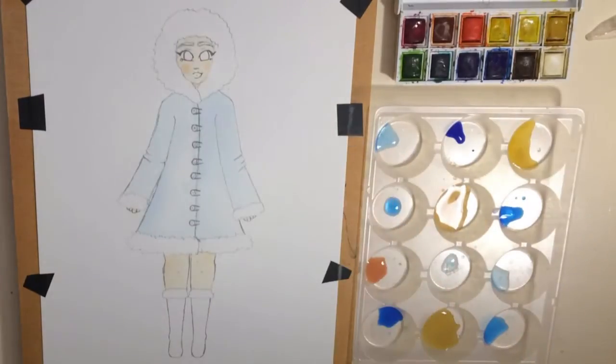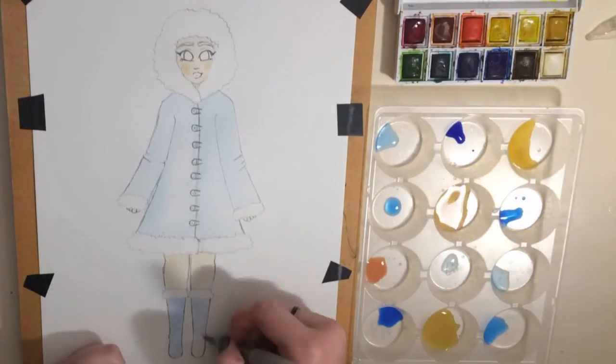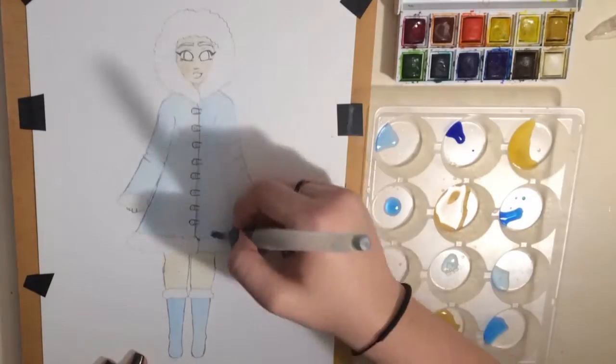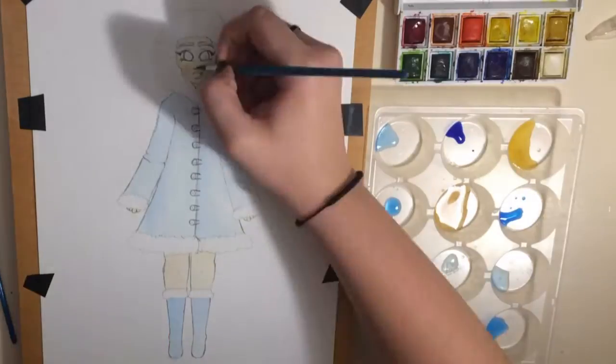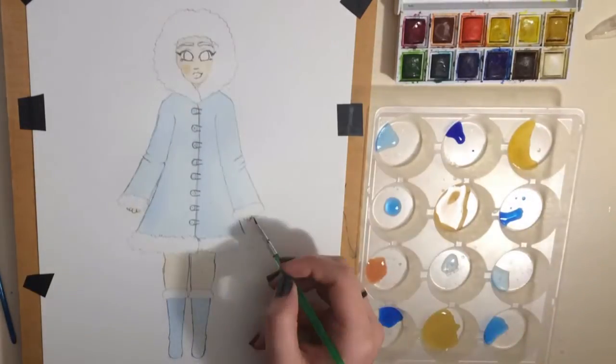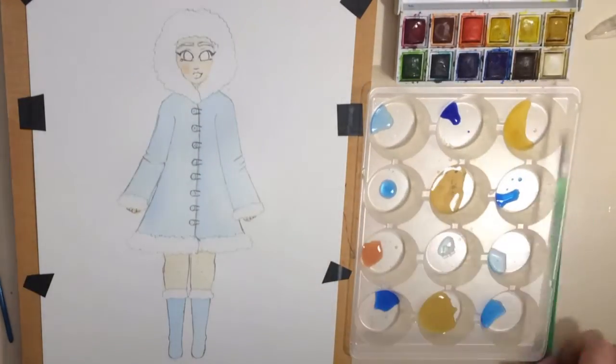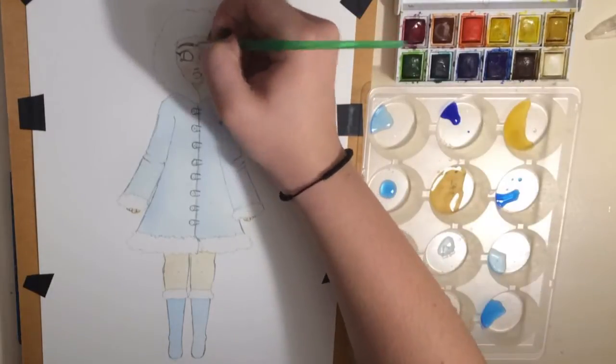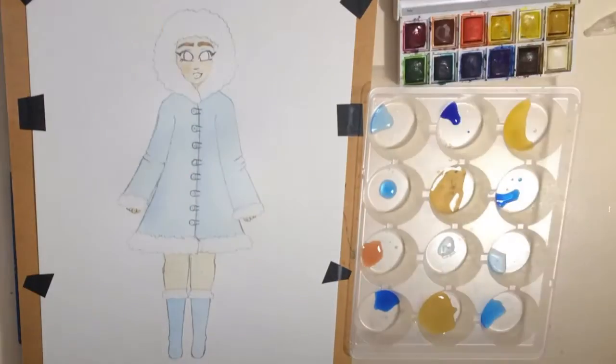...I imagined it being extremely cold. So to emphasize how cold it was, I made her really pale and gave her red cheeks and a red nose. Her knees look a little red too, because I'm a pretty pale person and whenever I get cold my cheeks get really red, so...